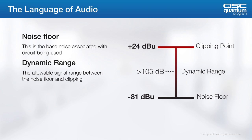The typical pro audio device has a clipping point of about plus 24. Both Q-SYS and most other DSPs on the market will clip at plus 24 dBu. For example, if you look at the Q-SYS CIM-L4 input card, the noise floor is around negative 81 dBu. So that means our dynamic range is greater than 105 dB, assuming clipping at plus 24.